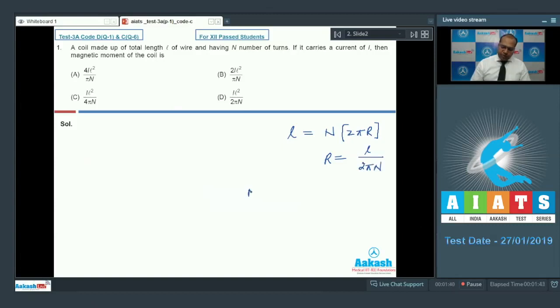Now the magnetic moment is equal to number of turns N, current I, into A that is π into R square. So the value of R is L upon 2πN whole square. So if I solve this it comes out to be I into L square divided by 4πN. So option C is correct.